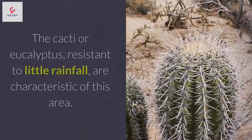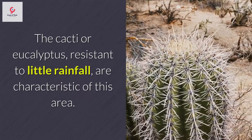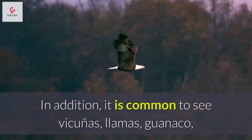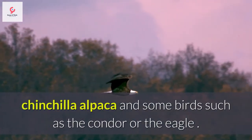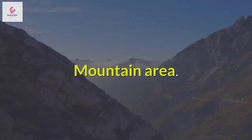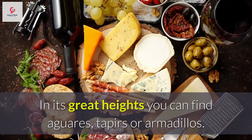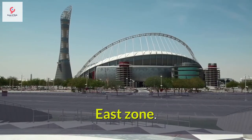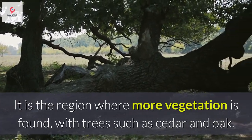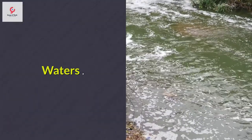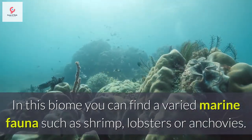In the Sierra area, cacti and eucalyptus, resistant to little rainfall, are characteristic. It is also common to see vicuñas, llamas, guanaco, chinchilla, alpaca, and birds such as the condor or the eagle. In the mountain area at great heights you can find tapirs or armadillos. The eastern zone is the region where more vegetation is found, with trees such as cedar and oak. In the waters biome you can find varied marine fauna such as shrimp, lobsters, and anchovies.